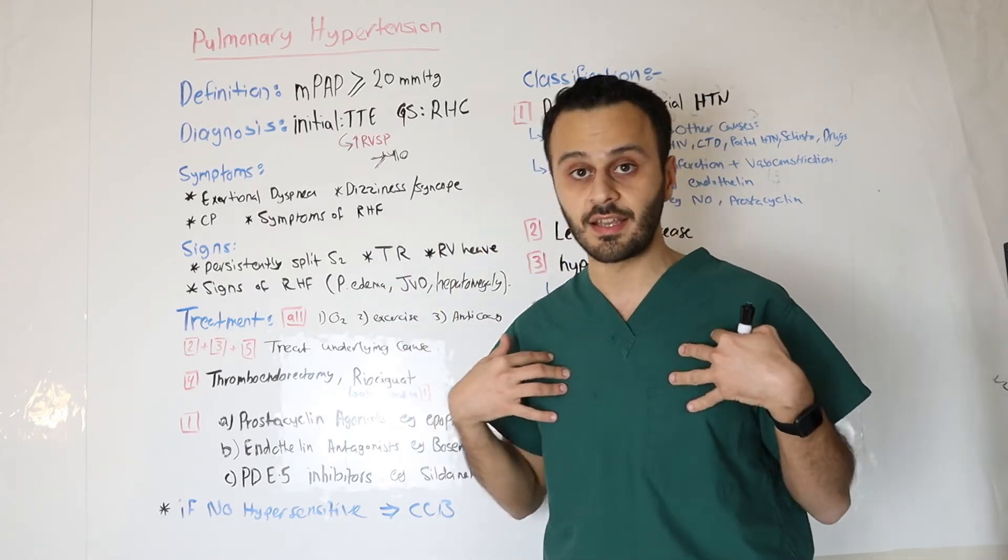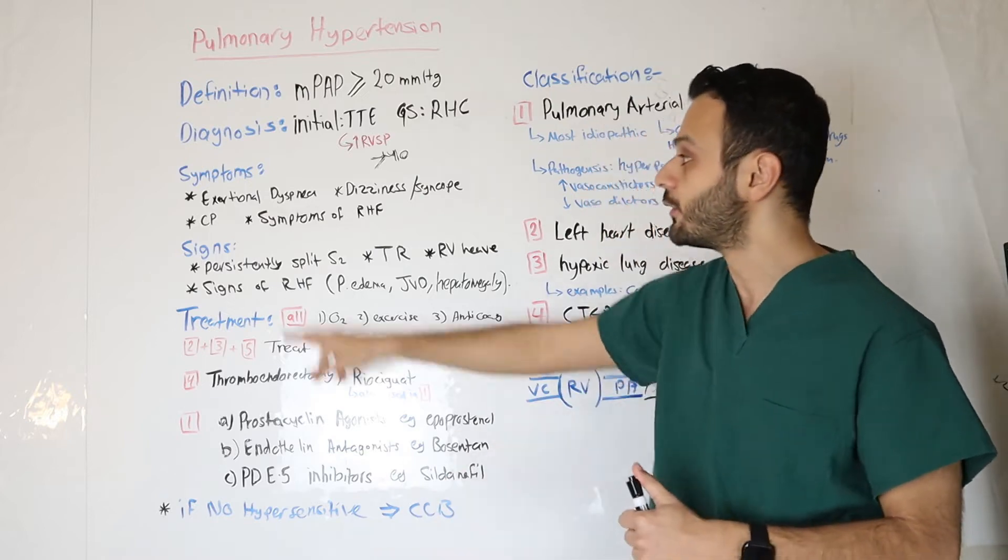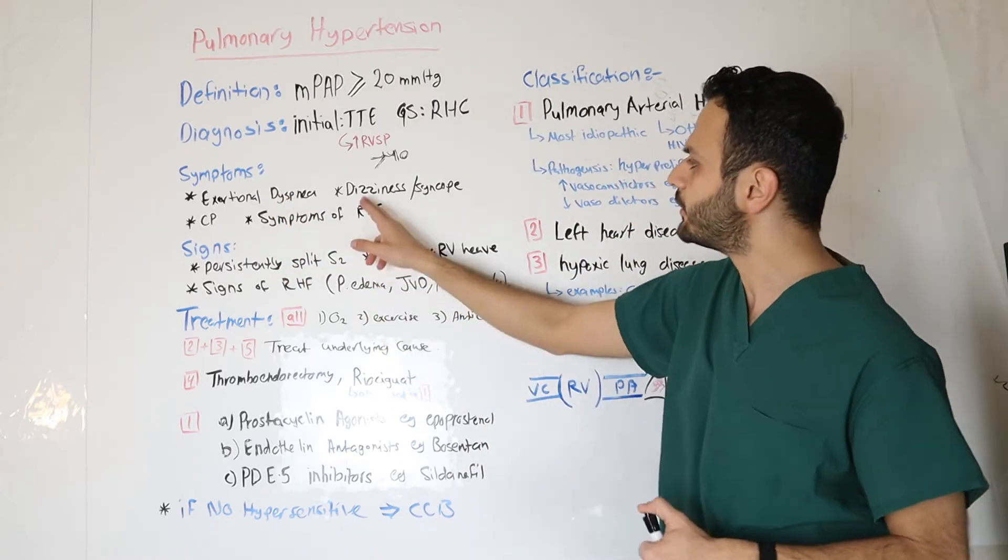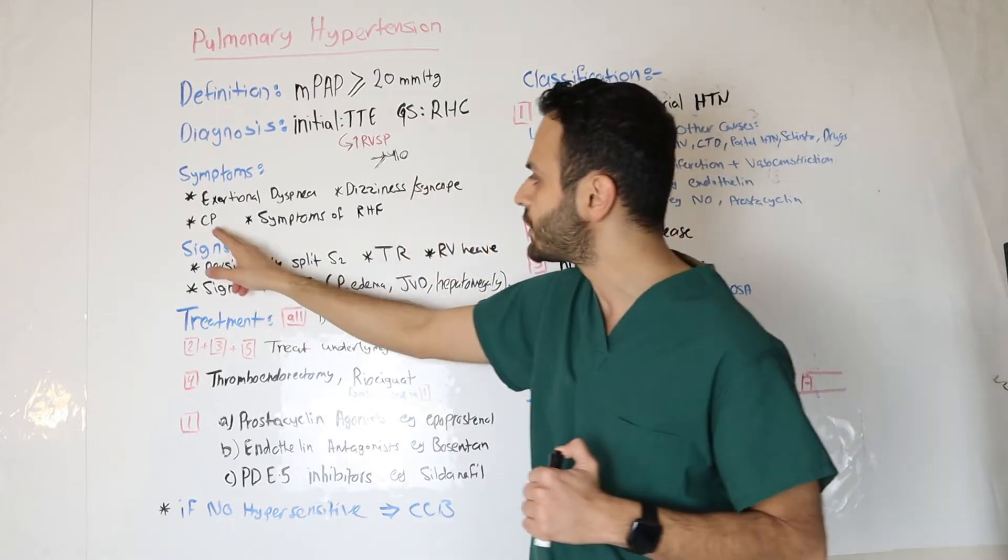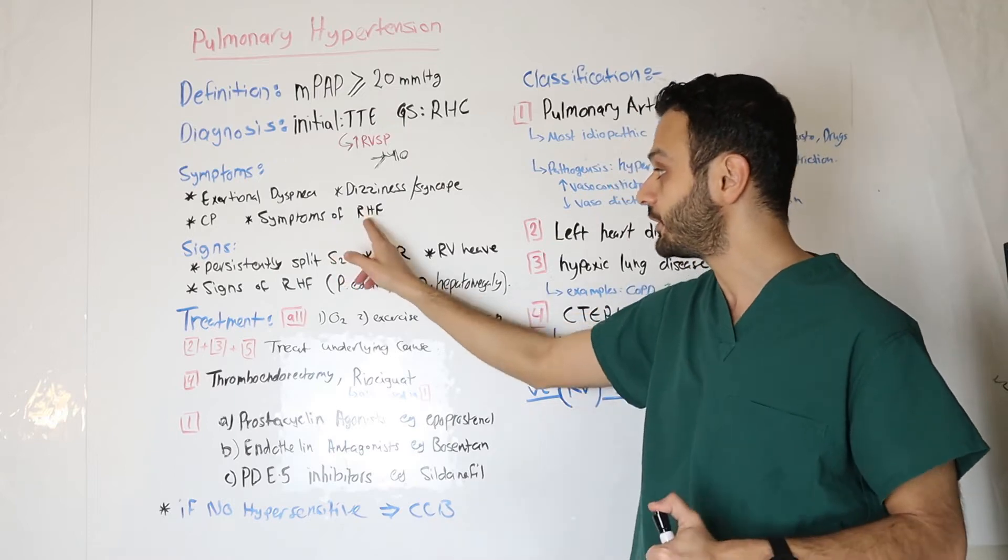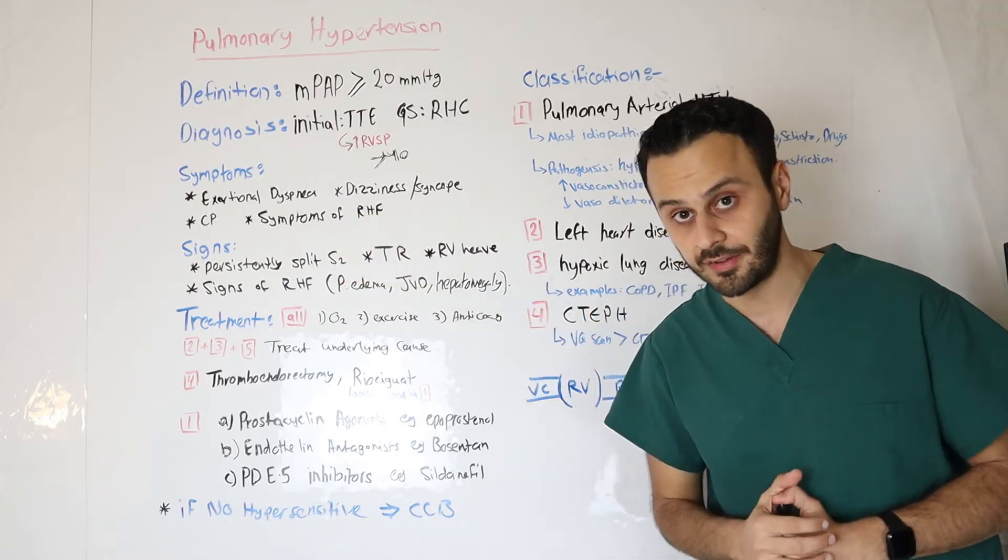And thus, when you exercise and you have that pulmonary hypertension, you will develop dyspnea. Other symptoms include dizziness, syncope, chest pain, and if pulmonary hypertension remains untreated, patients will eventually develop right side heart failure.